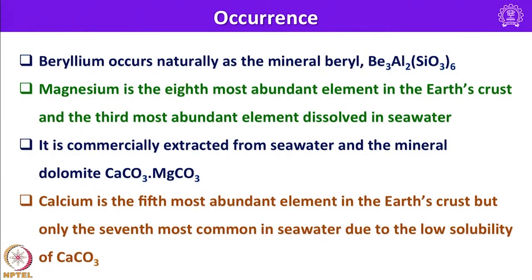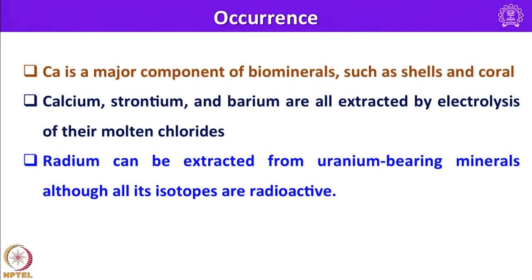Beryllium occurs naturally as the mineral beryl, an important ore with composition Be3Al2(SiO3)6. Magnesium is the 8th most abundant element in Earth's crust and the third most abundant element dissolved in seawater, extracted commercially from seawater and the mineral dolomite — a 1:1 combination of calcium carbonate and magnesium carbonate. Calcium is the 5th most abundant element in Earth's crust but only 7th most common in seawater due to the low solubility of calcium carbonate. Calcium, strontium, and barium are all extracted by electrolysis of their corresponding molten chlorides.